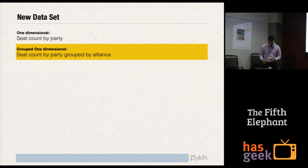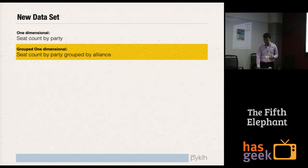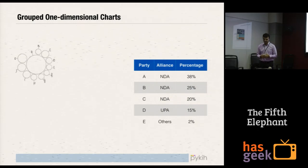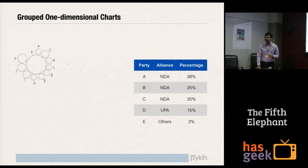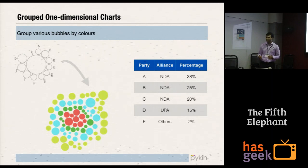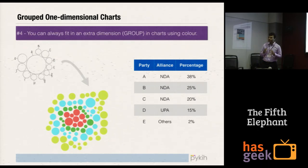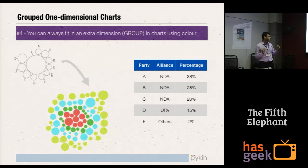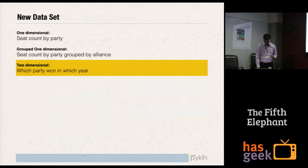Let's look at another dataset: seat count by party grouped by alliance. Now we are adding a new concept — grouped by alliance. If I had a bubble chart where the radius of the circle is the percentage, and we start adding color where the alliance is plotted using color, it becomes a grouped one-dimensional chart. We've now used color to communicate data. You can always add an extra dimension into your standard charts and graphs by communicating it using colors — so use colors very effectively.